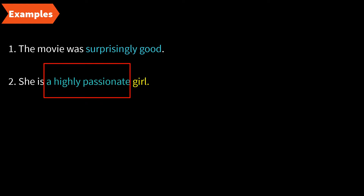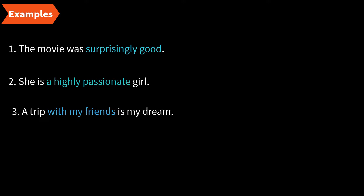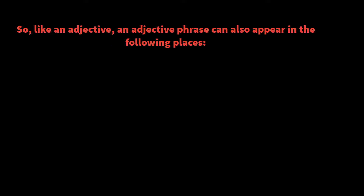Let's look at one more example: 'A trip with my friends is my dream.' In this example, 'with my friends' is the adjective phrase giving information about the noun 'trip.' Which trip? With my friends. 'A trip with my friends is my dream.' So like an adjective, an adjective phrase can also appear in three different positions.